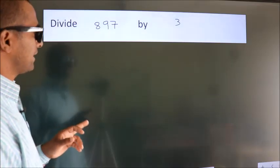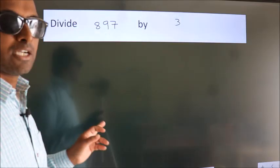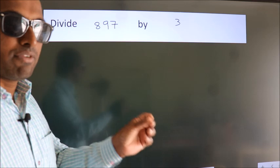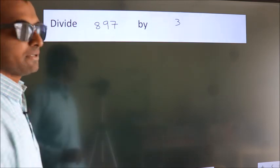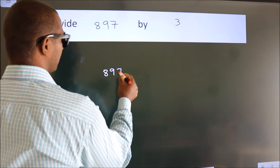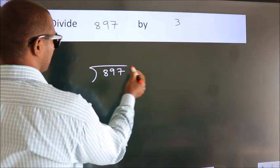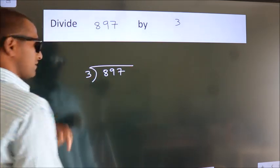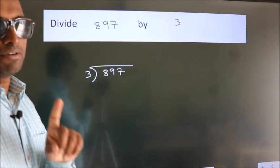Divide 897 by 3. To do this division, we should frame it in this way. 897 here, 3 here. This is your step 1.